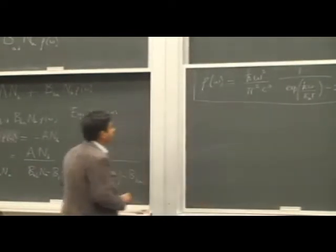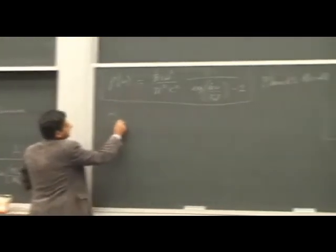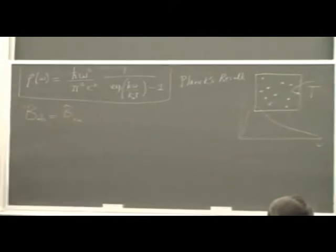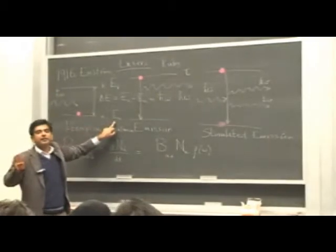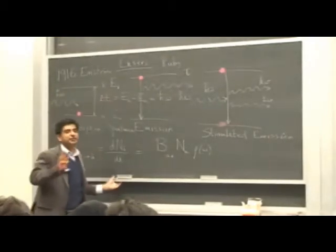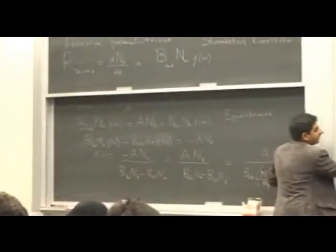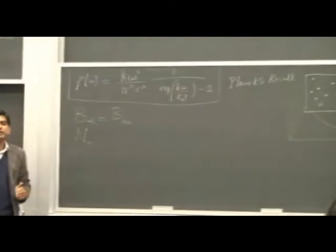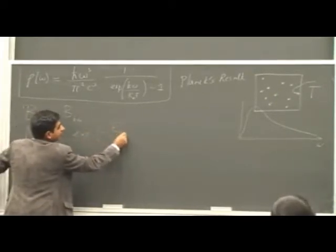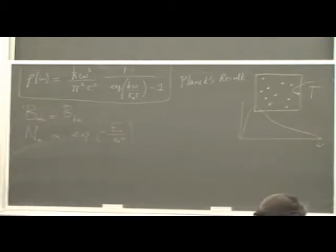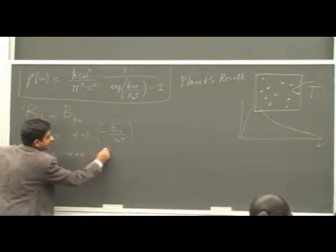The two can only match if we make the substitution that B_AB equals B_BA — the two B constants are the same. But we have to take into account N_A over N_B. We have two energy levels A and B, with energies E_A and E_B. N_A, the fraction of atoms in the lower energy level, is proportional to exp(−E_A / k_B T). This expression comes from Boltzmann. And N_B is proportional to exp(−E_B / k_B T).